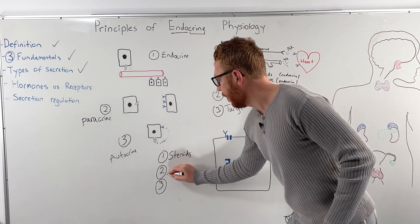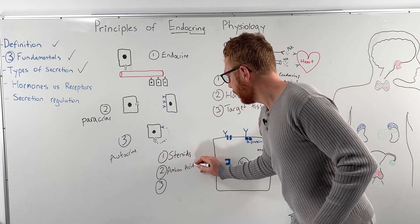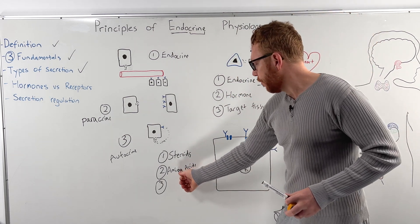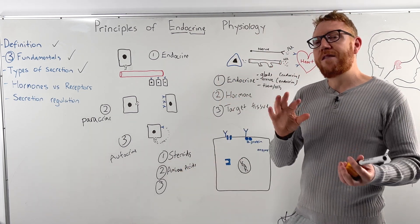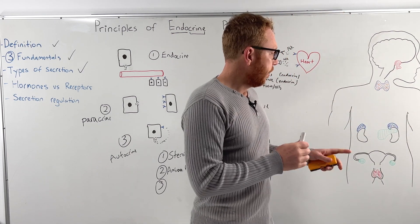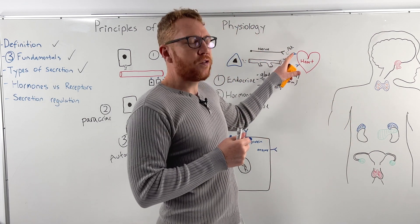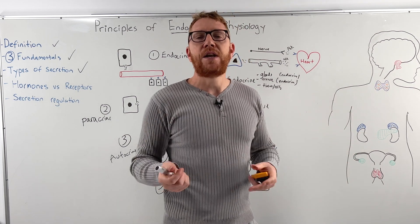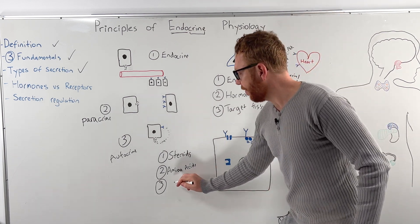Number two, we have amino acids. So amino acids are just building blocks of proteins, but they're just a single one. An example would be derived from tyrosine as an amino acid, and that can be made into some of the catecholamines. So the catecholamines in the adrenal medulla, which we saw up here, would be noradrenaline or adrenaline, or even the thyroid hormone T3, T4 amino acid-driven hormones, should I say.